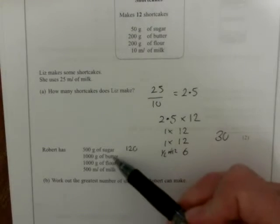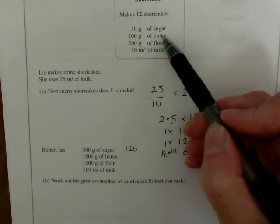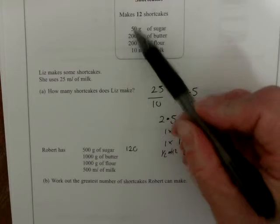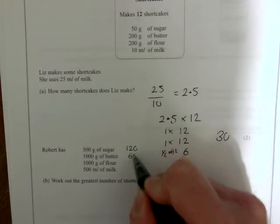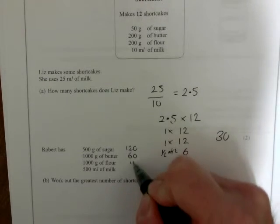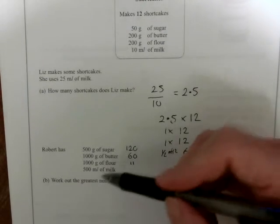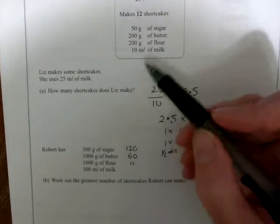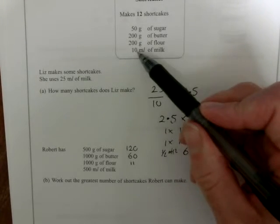With 1,000 grams of butter, that's five times as much butter, because we had 200. So, 5 times 12 is 60. So, we're now down to 60. It's going to be exactly the same for flour. And then when we come to the 500 milliliters of milk, well, I could work it out, but it's going to be 50 divided by 10,